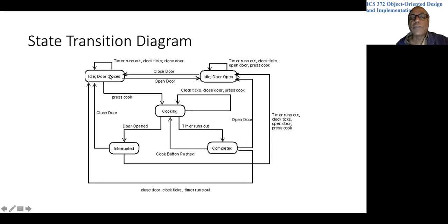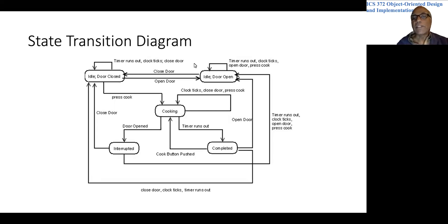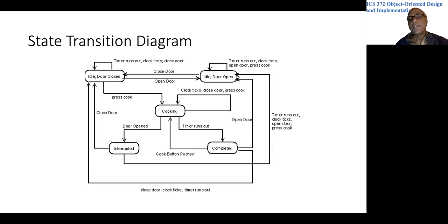For example, if the door is closed and you open the door, we move from the idle door-closed state to idle door open — open door is the event label on the edge. As a second example, if the microwave is cooking and the clock ticks, it remains in the cooking state. But if the timer runs out from cooking, we go to the completed state. And in the completed state, if you press the cook button, we are back to cooking. There are five states in the diagram, just as in the table — no new information, but for some people seeing a picture is easier.